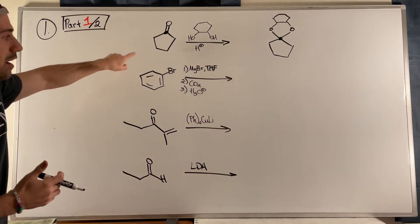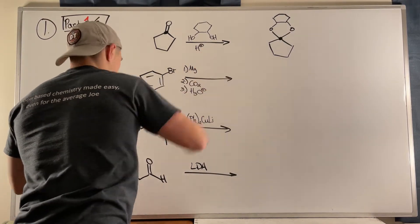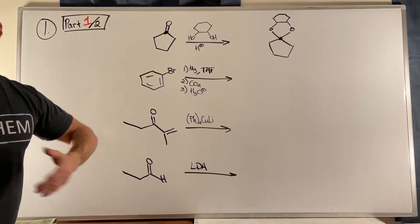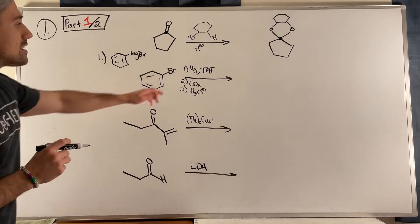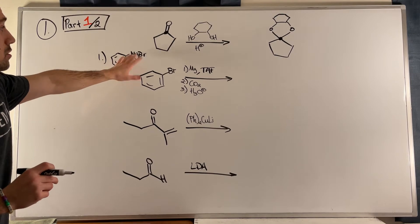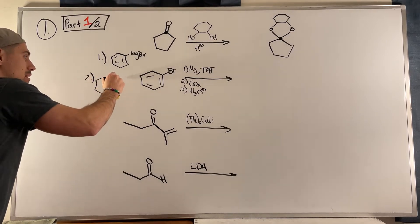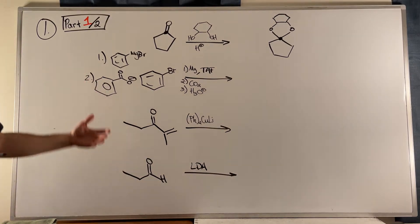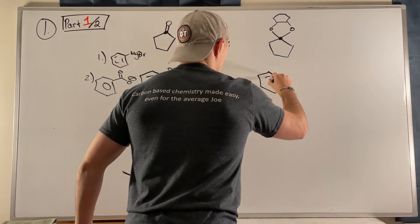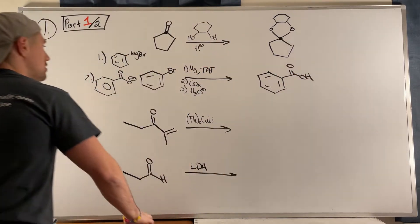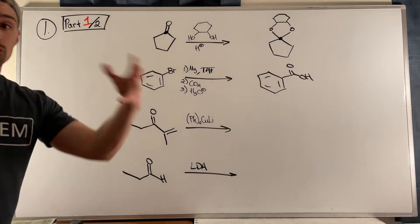Down to the second problem. We have benzyl bromide, and in step one we throw in magnesium to make a Grignard reagent, giving us the MgBr species. In step two, we throw in CO2 — the Grignard reagent attacks CO2 to form a carboxylate anion. We then protonate it up, quenching the negative charge to produce a carboxylic acid. That's how we use a Grignard reagent attacking CO2 to make carboxylic acids.